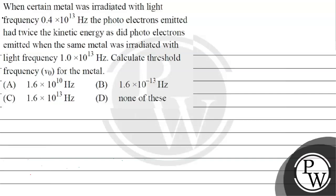Hello Bacho, let's read this question. When a certain metal was irradiated with light of frequency 0.4 × 10^13 Hz, the photoelectrons emitted had twice the kinetic energy as the photoelectrons emitted when the same metal was irradiated with light of frequency 1 × 10^13 Hz. Calculate the threshold frequency for the metal.